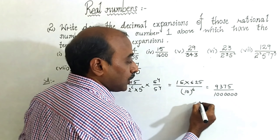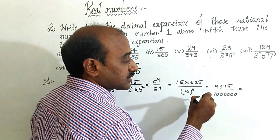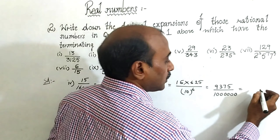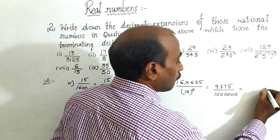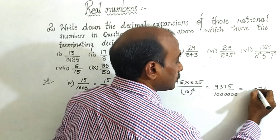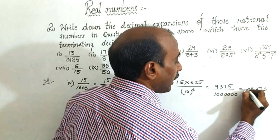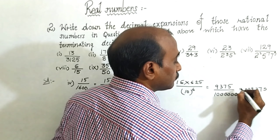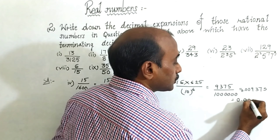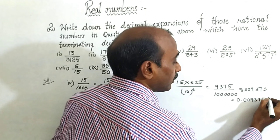Now you have to take the decimal after six digits from right to left — one, two, three, four, five, six. This gives 0.009375.